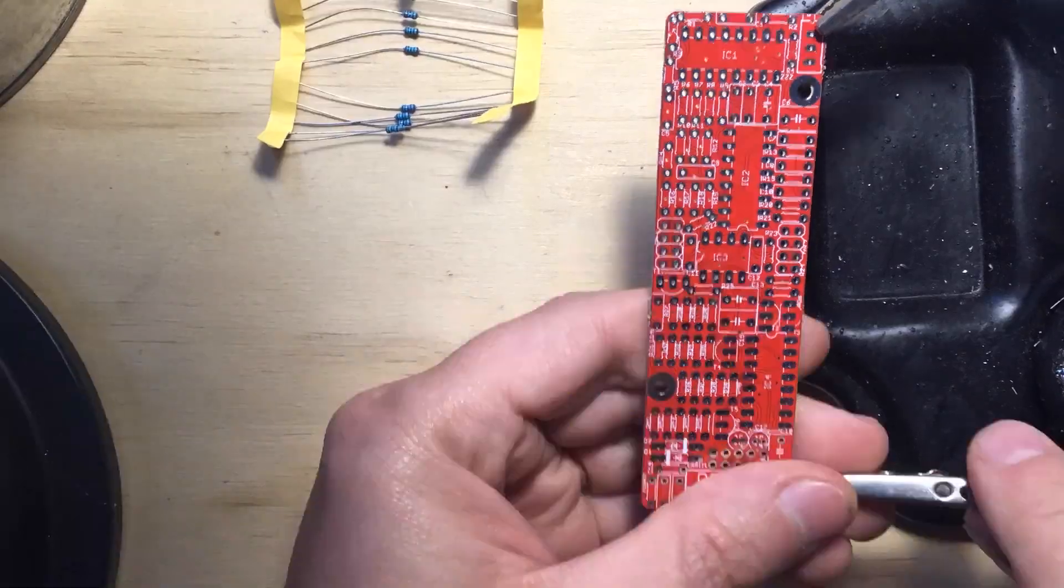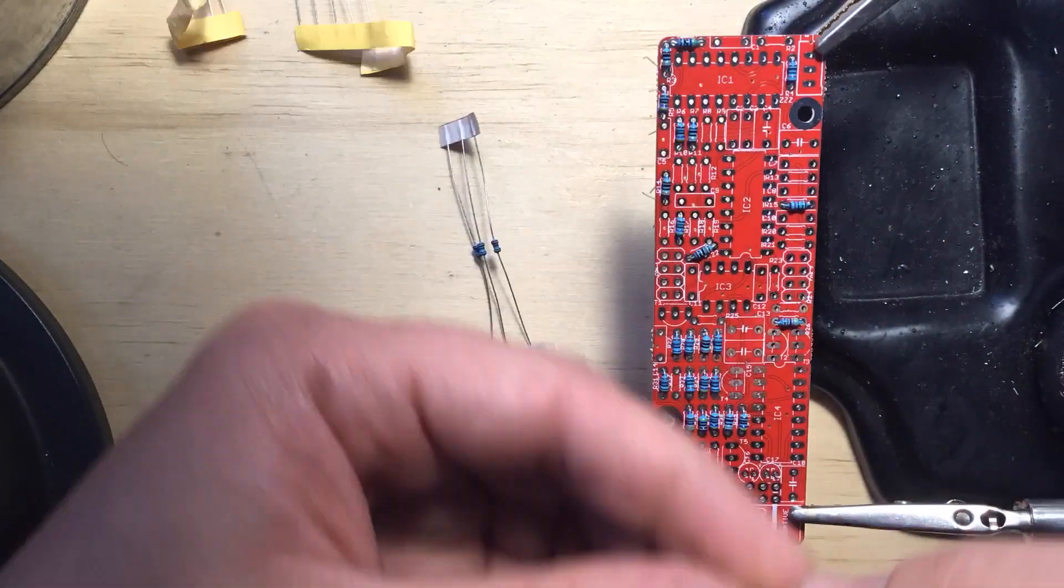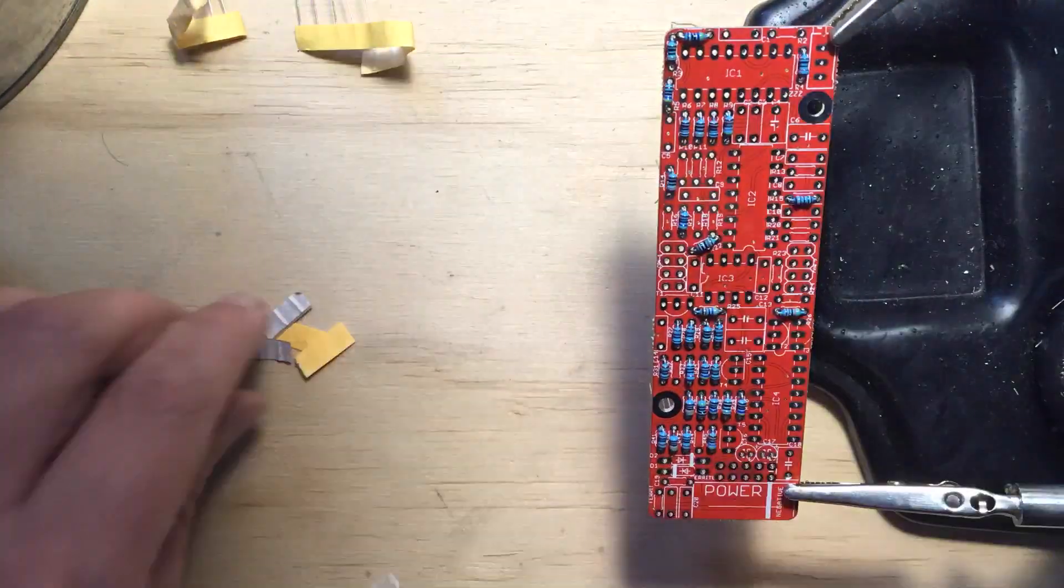Next I installed all of the resistors, diodes, and ferrite beads on the main board and proceeded to solder them from above.